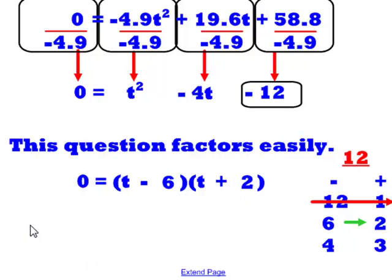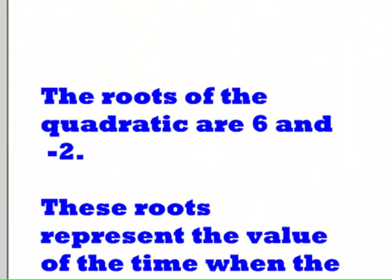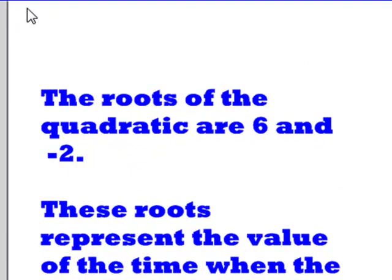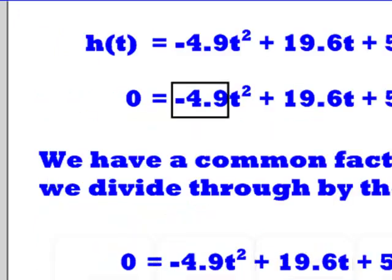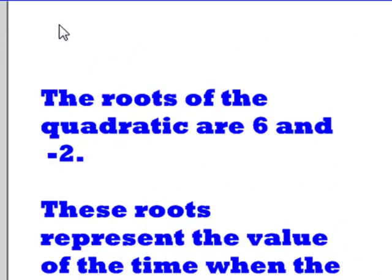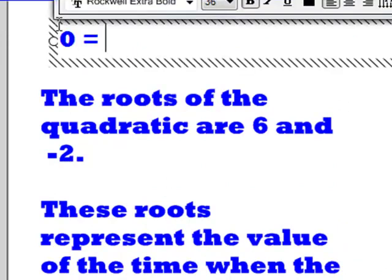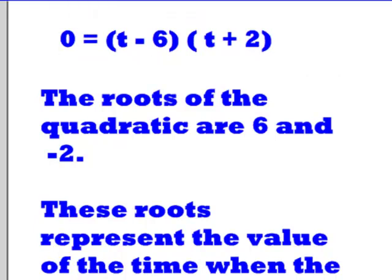Since the equation factors easily, there's no point in using the quadratic formula. We see that the roots of our quadratic are 6 and -2. And again, 6 and -2 are simply taken by the fact that 0 equals (t - 6)(t + 2). We take the opposite signs.